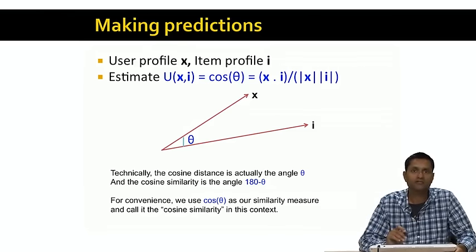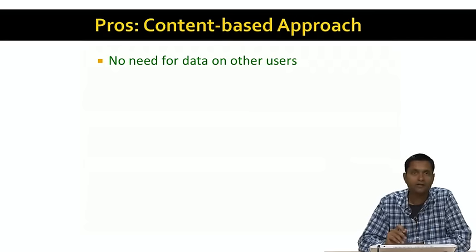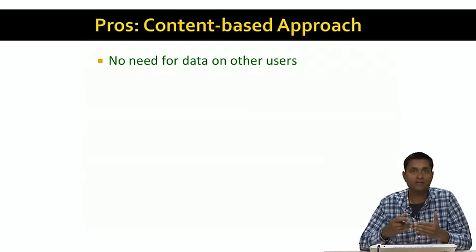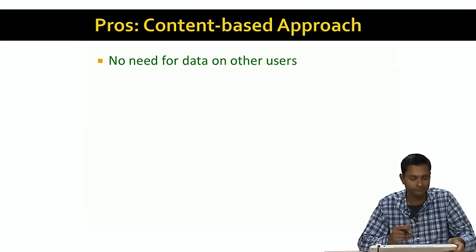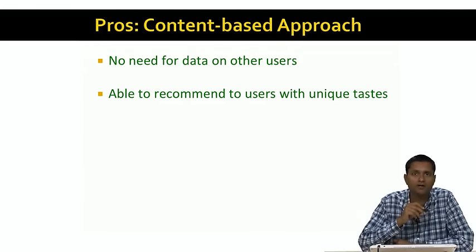That's the theory of content-based recommendations. Now let's look at some of the pros and cons. The biggest pro is that you don't need data about other users in order to make recommendations to a specific user. This is very valuable because you can start making content-based recommendations from day one, for your very first user.